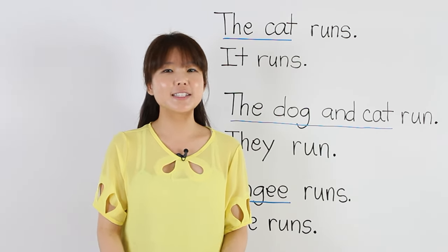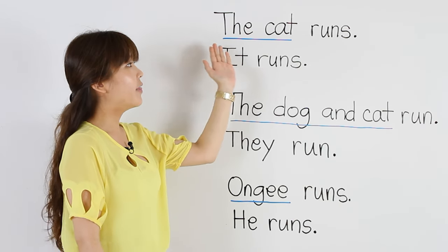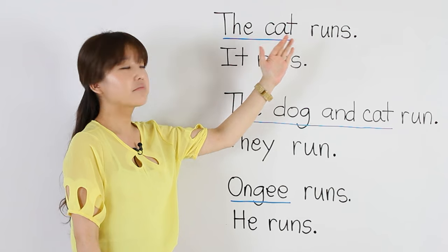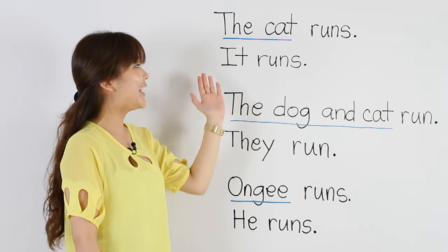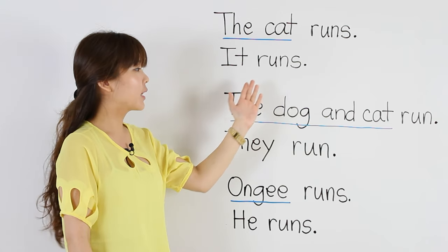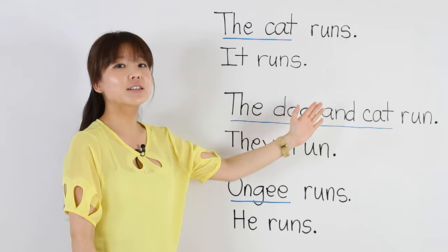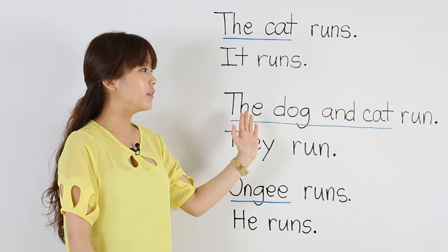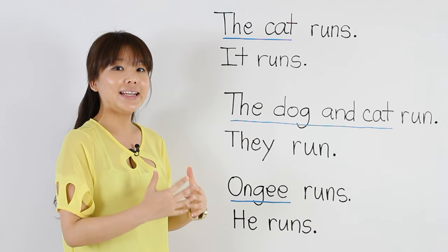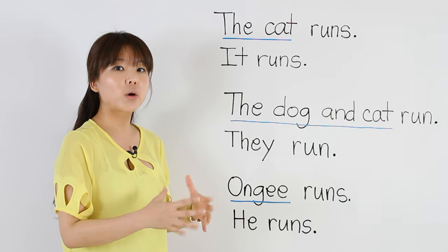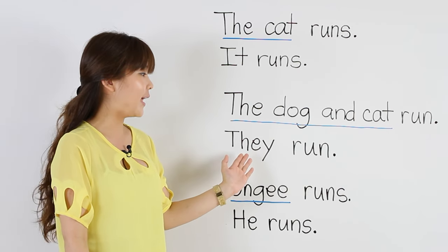Let's do some more practice. The first sentence on the board says, The cat runs. The cat is an animal, so we have to say, It runs. The next sentence says, The dog and cat run. The dog and cat are two animals, so anytime you have two or more things, we say, They run.